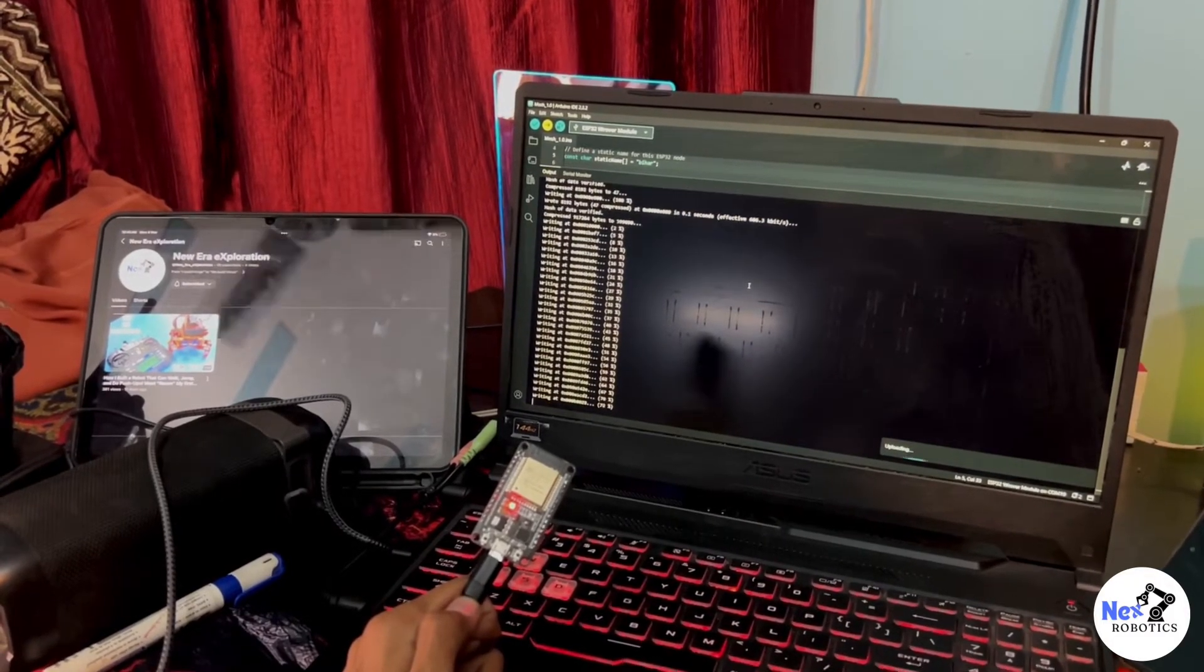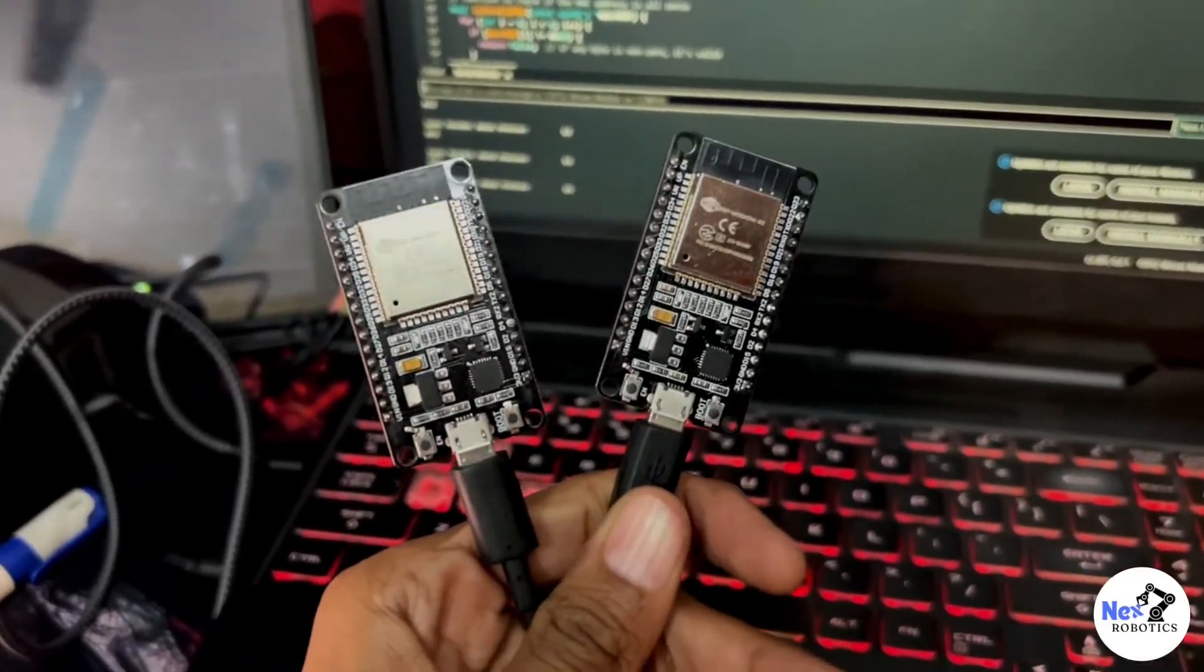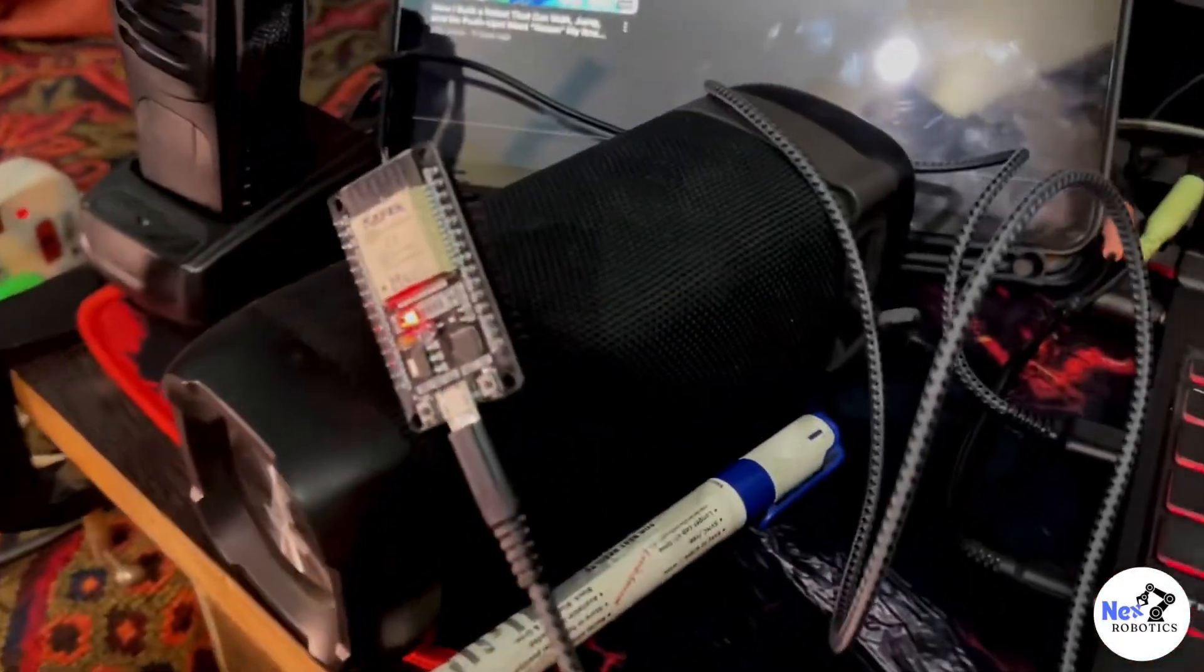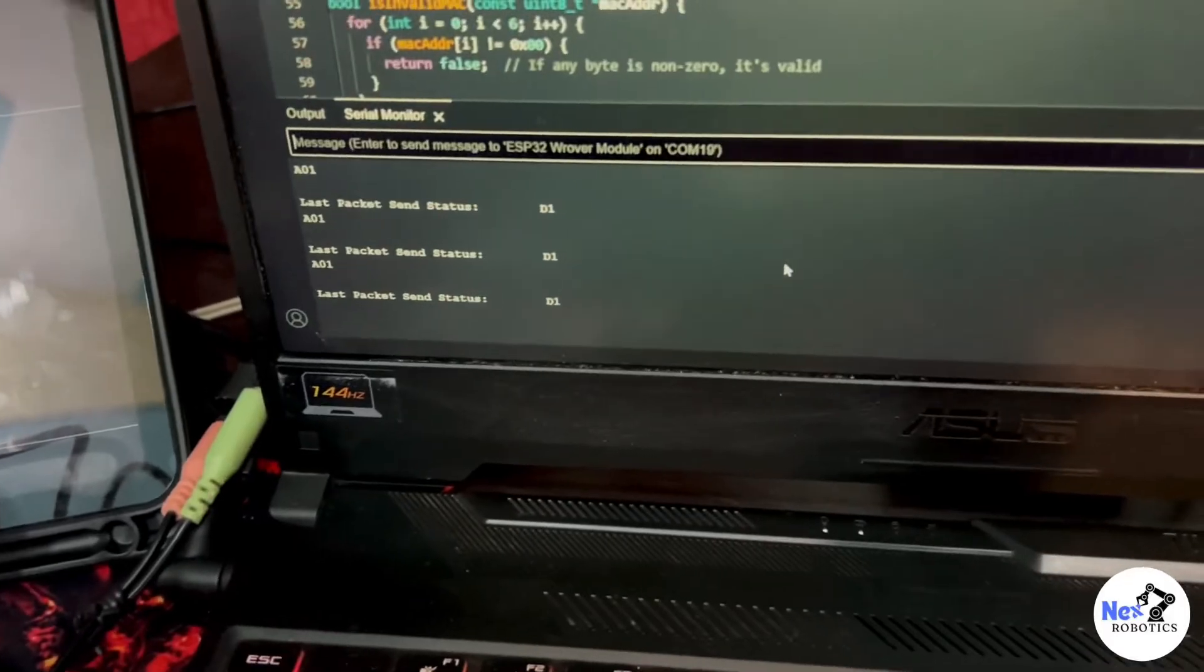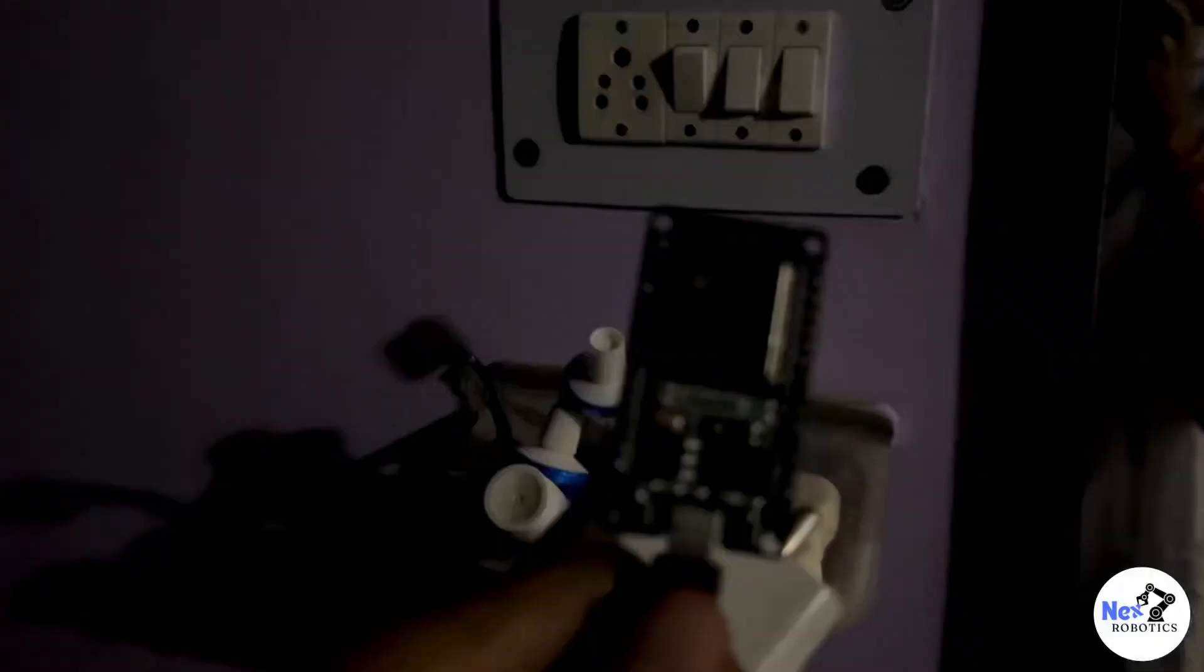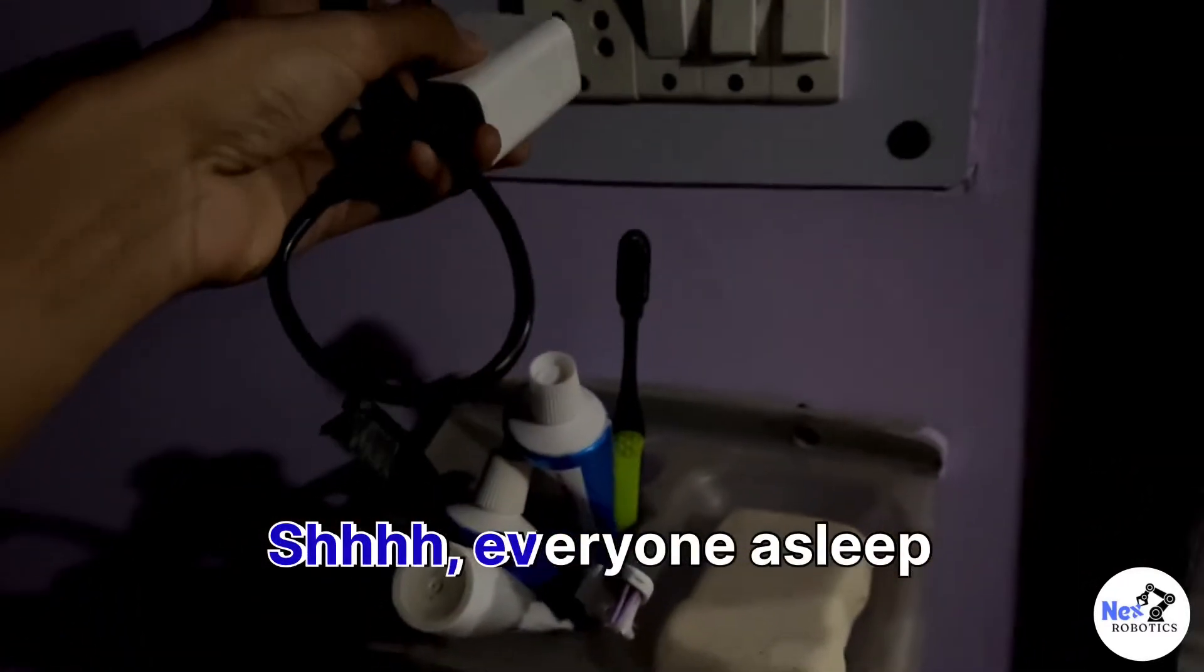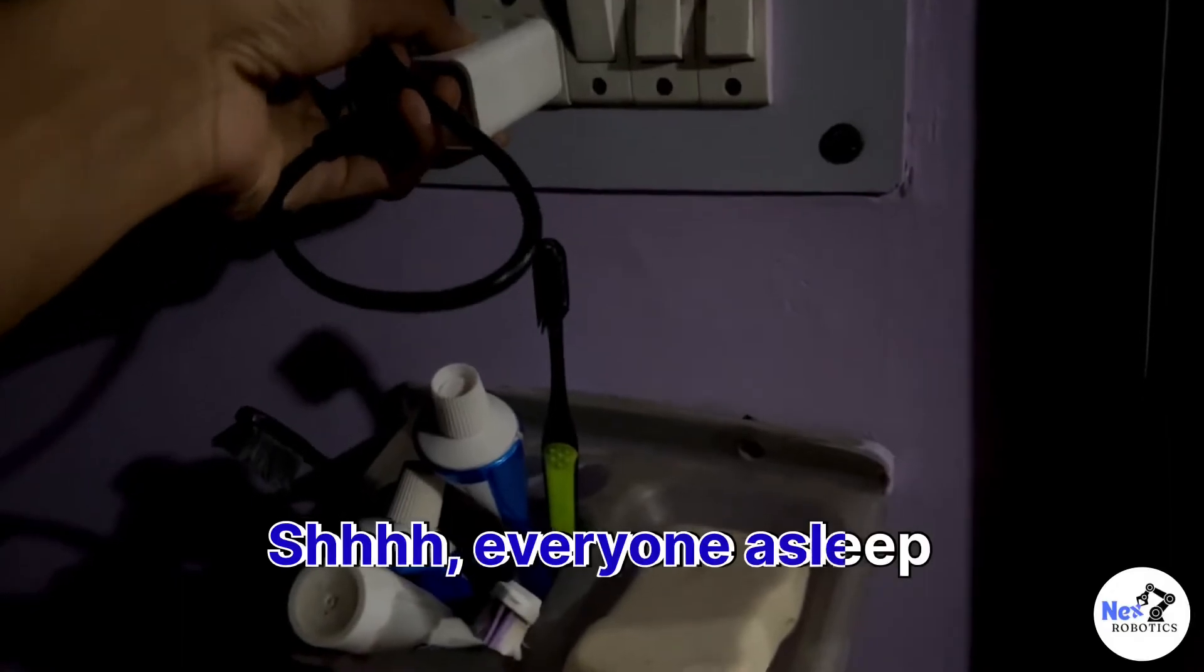Okay, so here are my two nodes ready to be deployed, and here is one node connected to the computer which is sending and fetching the data. So let's see. Okay, so this is the farthest area of my house, so I am plugging my node here. So one node is here and one node is back there in the room.